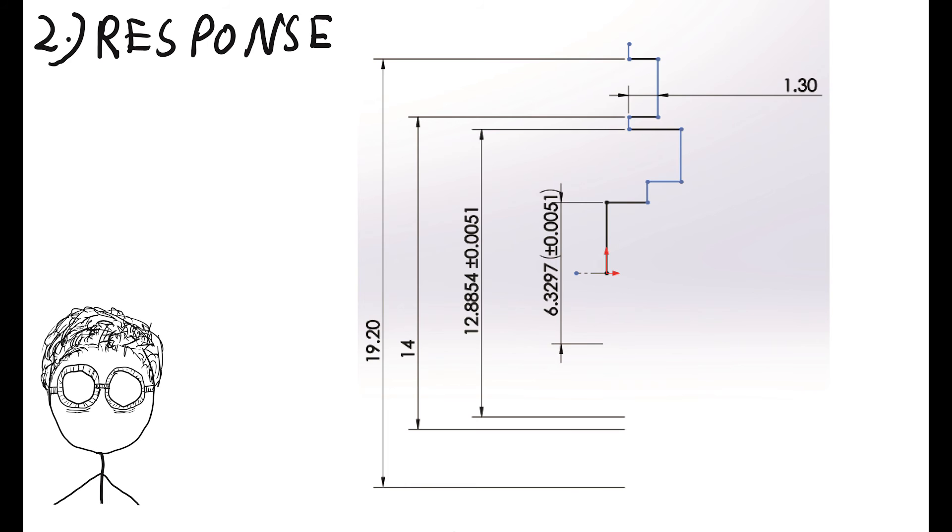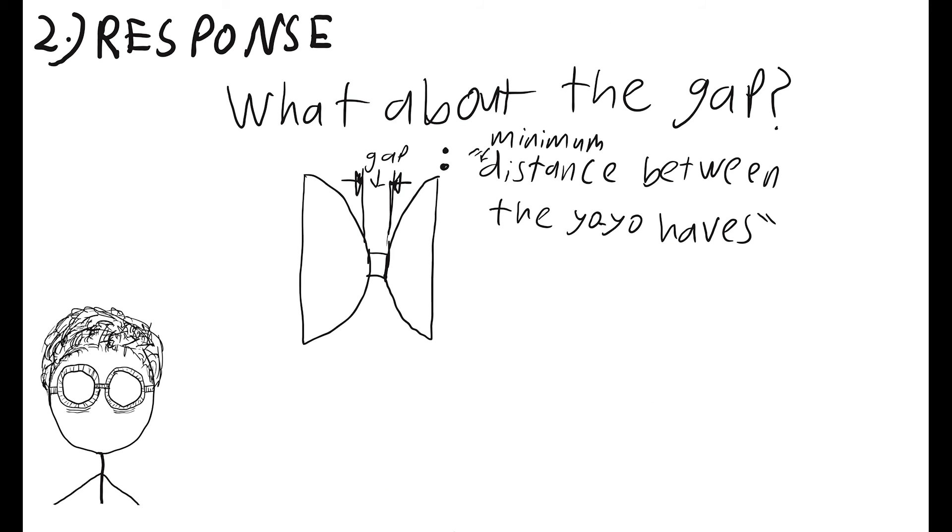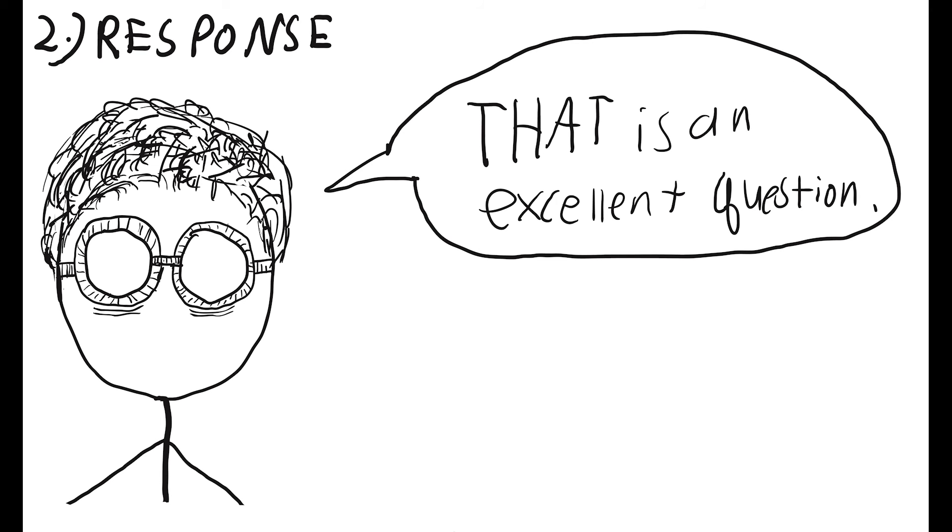Adding these dimensions in with those we derived in the bearing step, we can now see how far we've come, where everything in black is fully defined and everything in blue is underdefined. But now I'm going to bring up something that the perceptive among you might have been wondering about. What about the gap? The minimum distance between the two yoyo halves? Surely not all gaps are the same. How do we design our yoyo to have a specific gap, and what should that gap be?